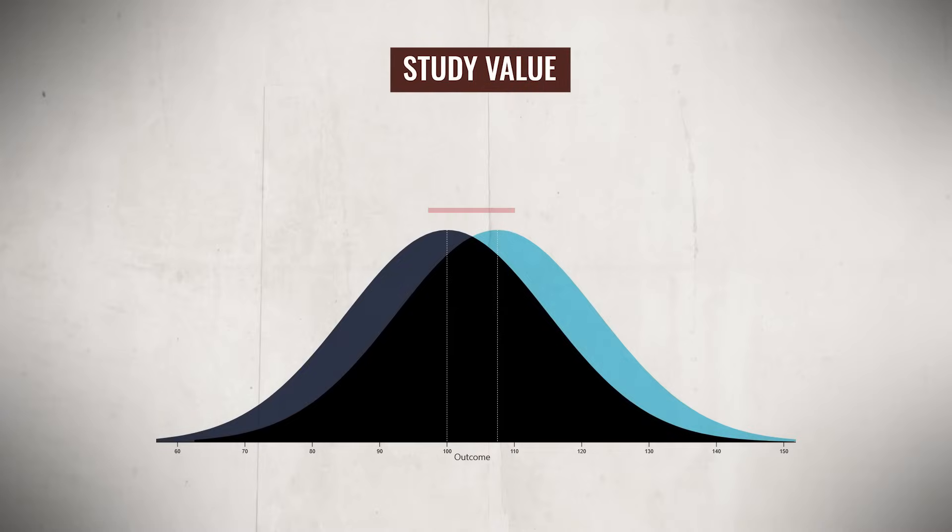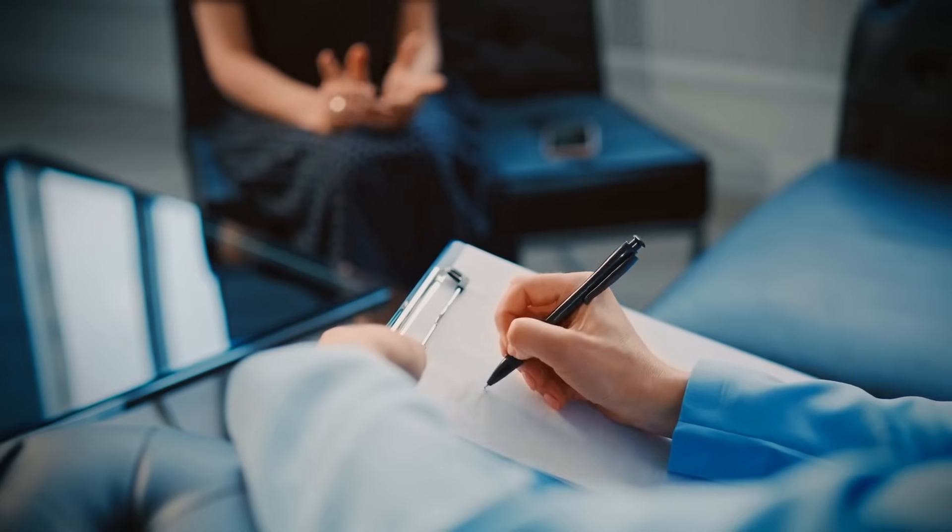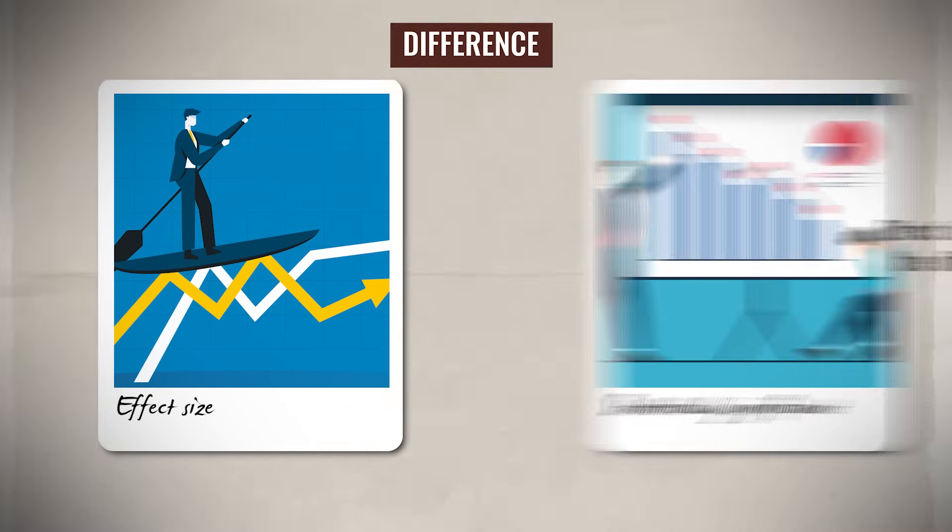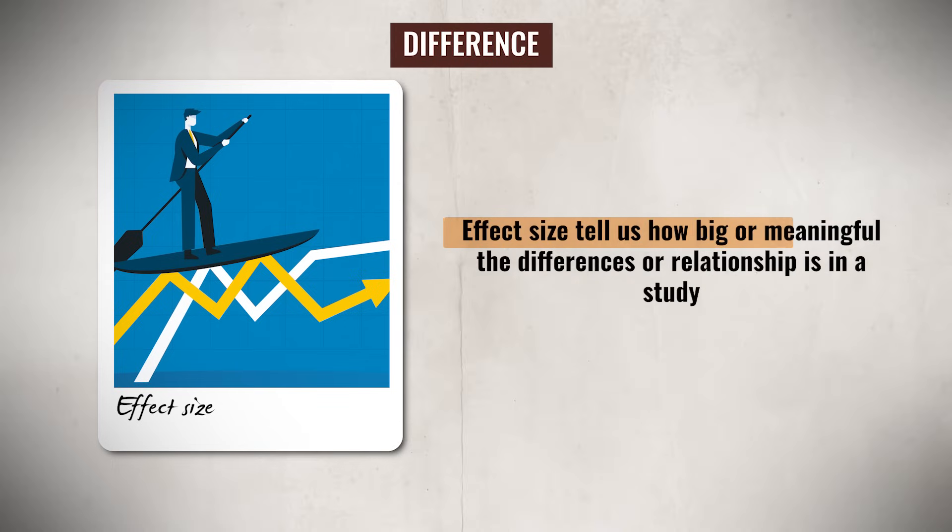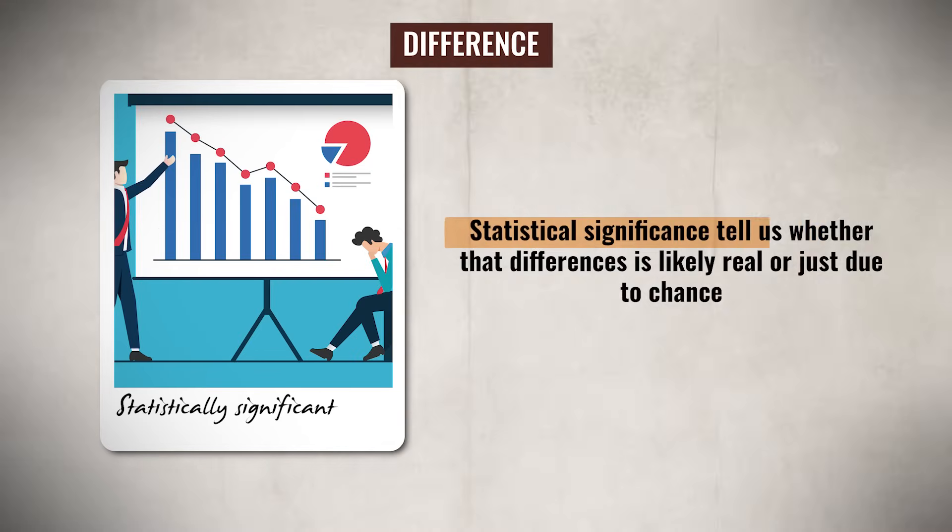At the same time, we see that the effect size for the study is small, which tells us that while the therapy does most likely reduce anxiety, the improvement may be minimal in practical terms. When remembering the difference between effect size and statistical significance, just remember that effect size tells us how big or meaningful the difference or relationship is in a study, while statistical significance tells us whether that difference is likely real or just due to chance. So statistical significance shows us if the results matter, and effect size shows us how much they matter in real life.